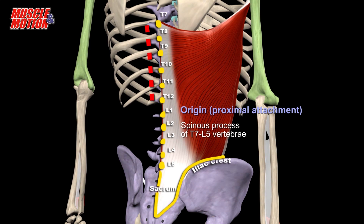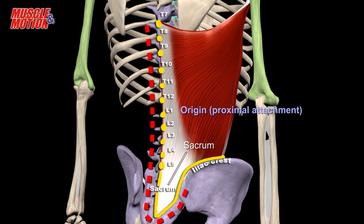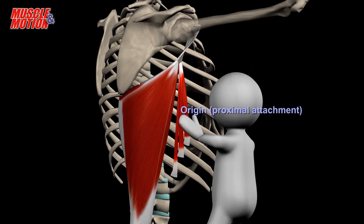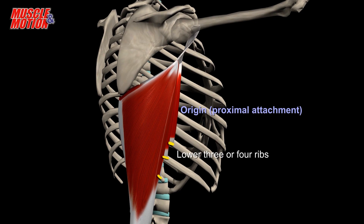It continues to the entire lumbar region, L1 to L5 vertebrae, and covers part of the sacrum. The tendon of the muscle also originates — proximal attachments — from the iliac crest, and in some variations, parts of the posterior ribs, specifically the 9th to 12th ribs.